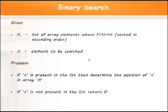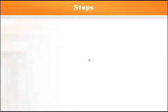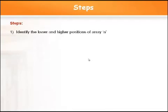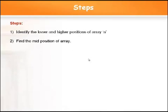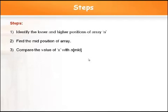Let us see the steps to perform binary search. Initially, identify the lower and higher boundaries of the array — lower boundary is 1 and the higher boundary is N. Then find the mid position of the array by taking the average of lower and higher positions, that is (low + high) / 2.